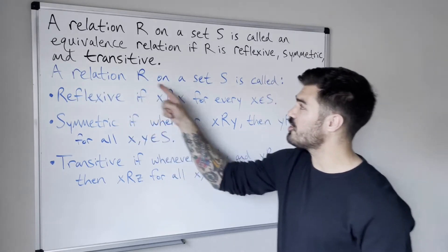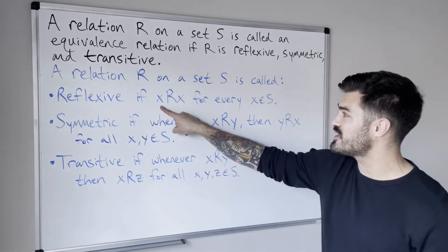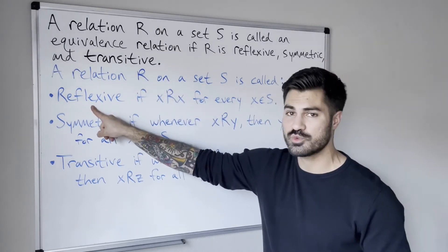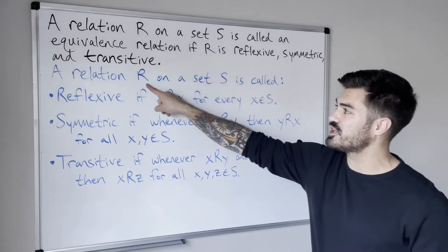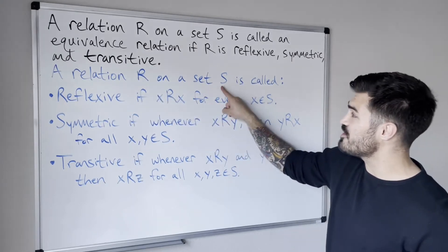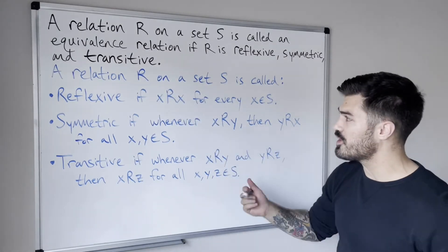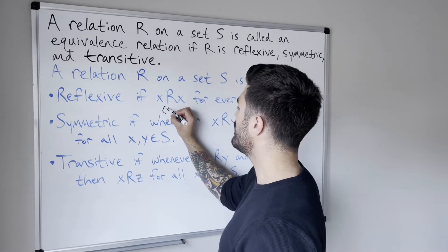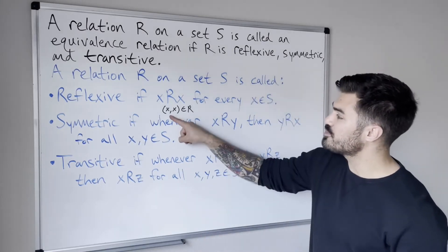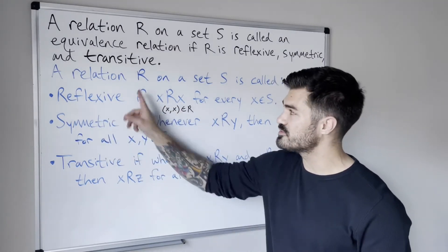A relation R defined on a set S is called reflexive if X is related to X for every X in S. How do we determine if a relation is reflexive? We look at the set that the relation is defined on, we look at every single element of that set, and we check the relation to see if every element in that set is related to itself. Another way to write this is that the ordered pair (X, X) must be in the relation for every element in S. If that's the case, then we say that the relation is reflexive; if not, it's not reflexive.